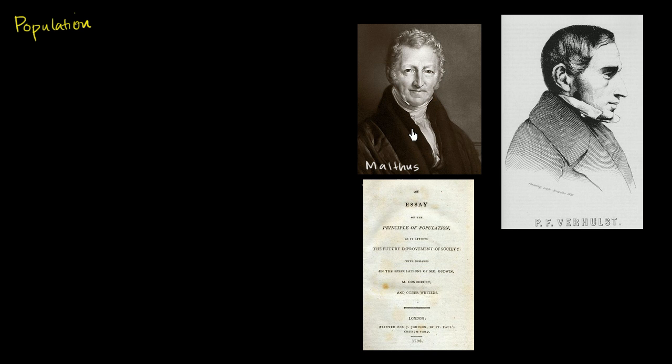He really challenged the notion that population could grow indefinitely and that we would always, through technology, be able to feed ourselves. Really that the environment would eventually put some caps on how much or where the population could grow to. P.F. Verhulst, and I'm sure I'm mispronouncing his name here, he was a Belgian mathematician who read Malthus' work and tried to model the behavior that Malthus was talking about.